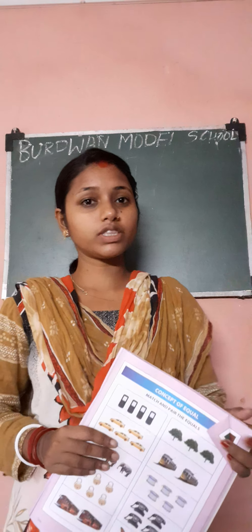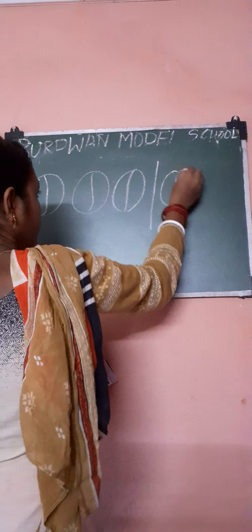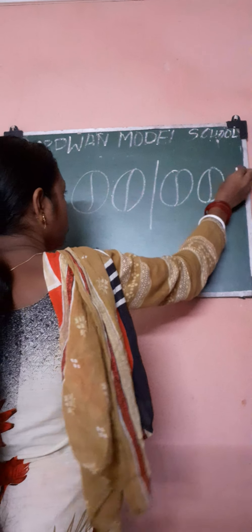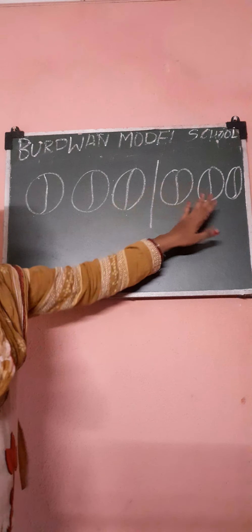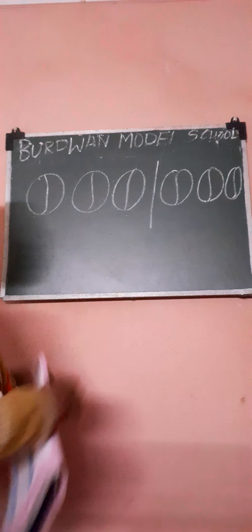Equal means both sides are the same. For example, 1, 2, 3 on the left side and 1, 2, 3 on the right side. So the left hand has 3 balls and the right hand also has 3 balls.